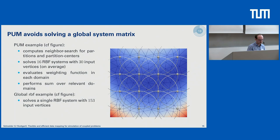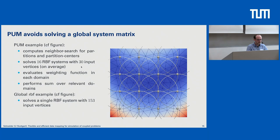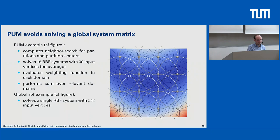Here's a small comparison using our running example. For the partition of unity method, we split the domain into 16 subdomains, solve 16 RBF systems inside each partition — where each system has only a subset of vertices, around 13 input vertices on average — evaluate the weighting function in each partition, and sum over all partitions to retrieve the global solution. On the other hand, the global RBF mapping method would construct one single mapping matrix of size 153 by 153, because we have 153 input mesh vertices.